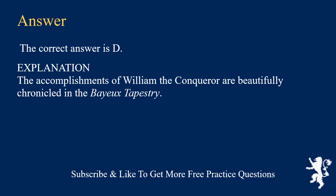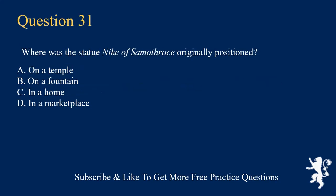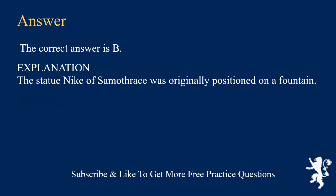Explanation: The accomplishments of William the Conqueror are beautifully chronicled in the Bayeux Tapestry. Where was the statue Nike of Samothrace originally positioned? A. On a temple. B. On a fountain. C. In a home. D. In a marketplace. The correct answer is B.